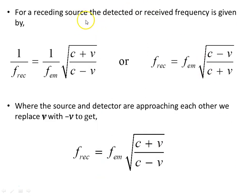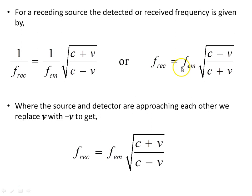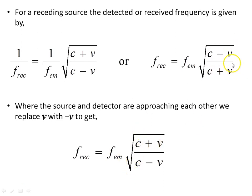For a receding detector, F received equals F emitted times the square root of (C - V)/(C + V). Where the source and detector are approaching each other, we simply replace V with minus V, and we get F received equals F emitted times the square root of (C + V)/(C - V), which is the reciprocal of the previous factor.